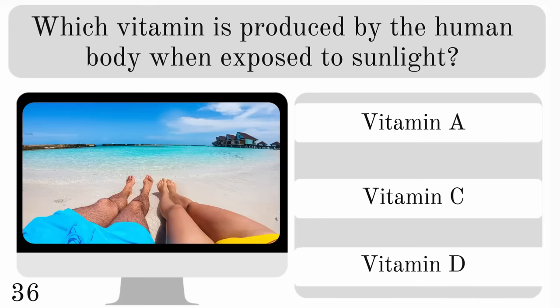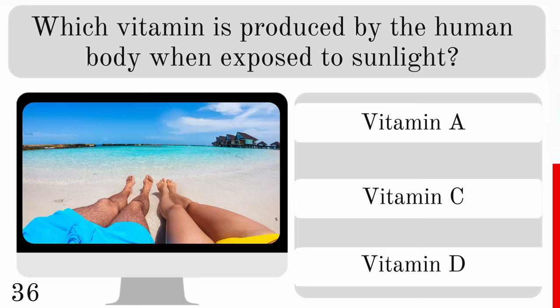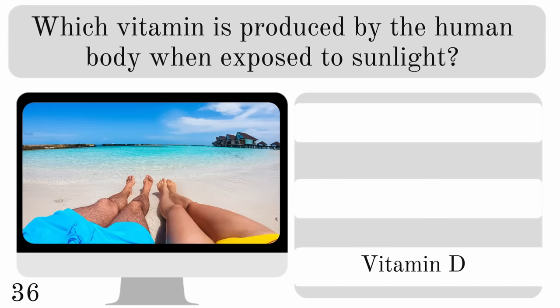Which vitamin is produced by the human body when exposed to sunlight? Vitamin A, C or D? The answer is vitamin D.